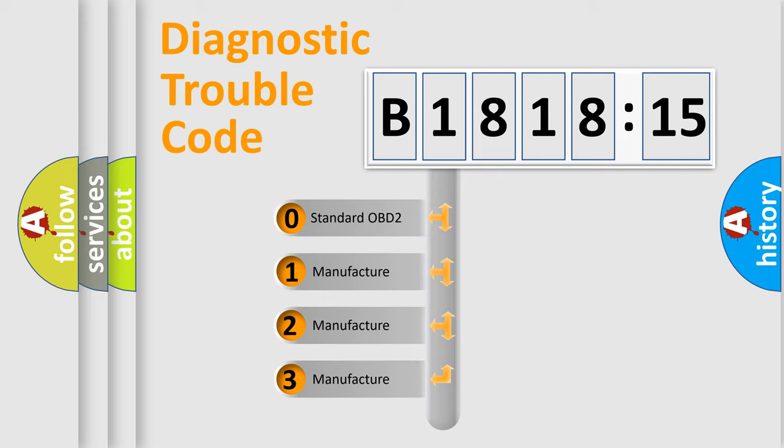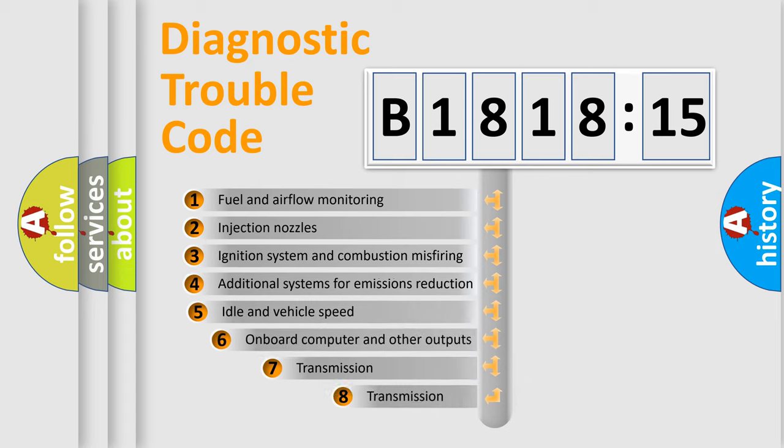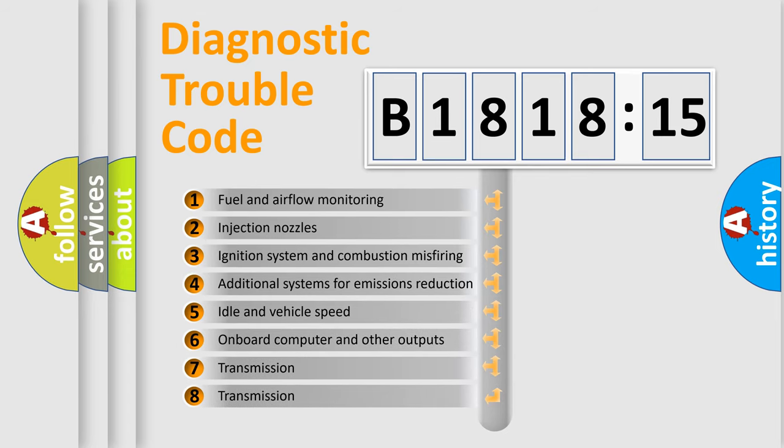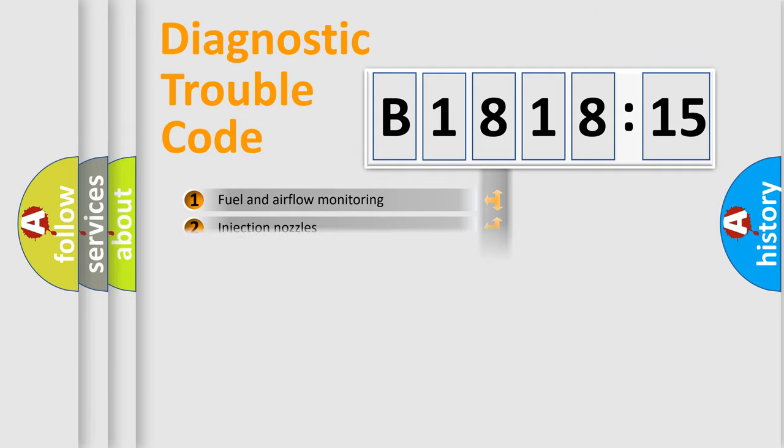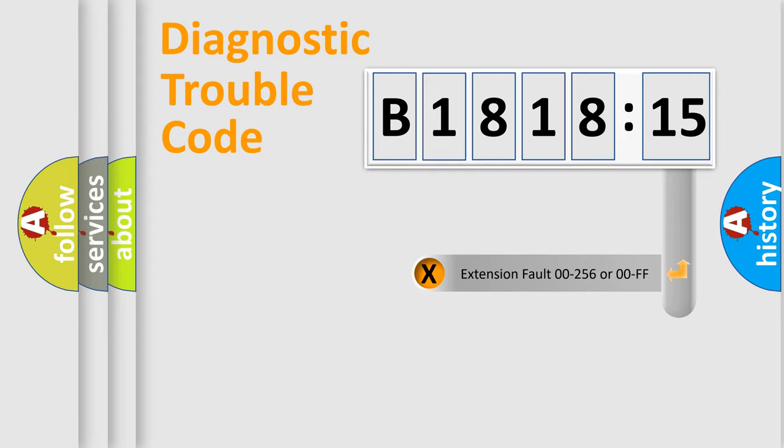This distribution is defined in the first character code. If the second character is expressed as zero, it is a standardized error. In the case of numbers 1, 2, 3 it is a car specific error. The third character specifies a subset of errors. The distribution shown is valid only for the standardized DTC code. Only the last two characters define the specific fault of the group.